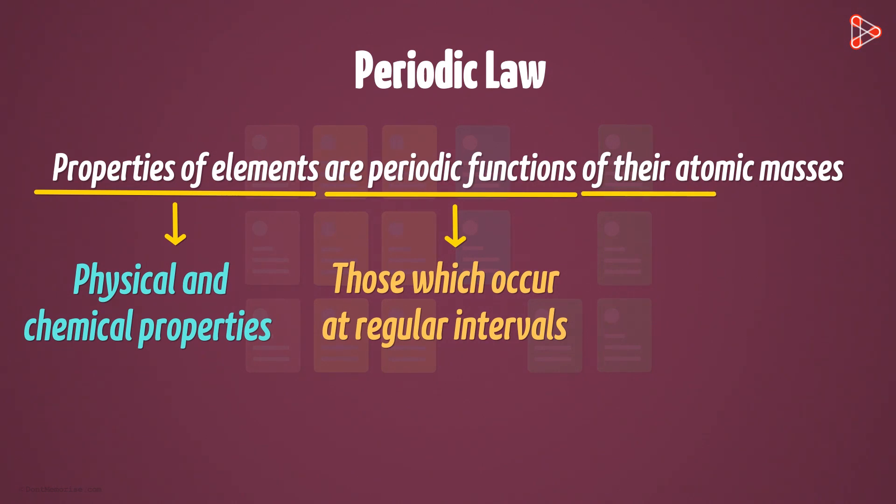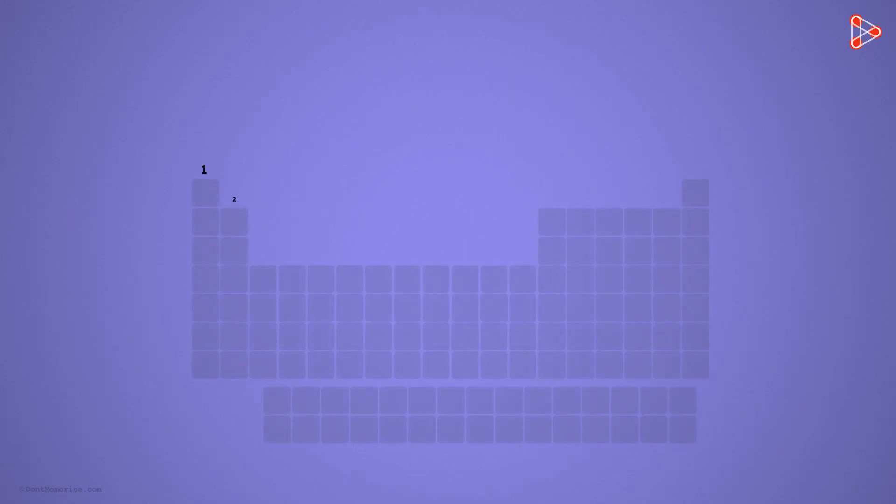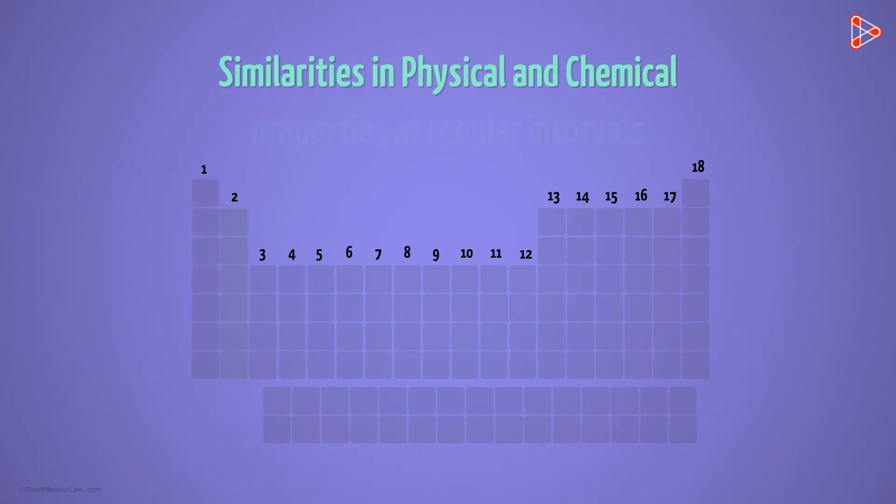And lastly, of their atomic masses means when arranged in the increasing order of their atomic masses. So can we simply say that when elements are arranged in the increasing order of their atomic masses, they show similarities in the physical and chemical properties at regular intervals? Yes, that's what Mendeleev meant.